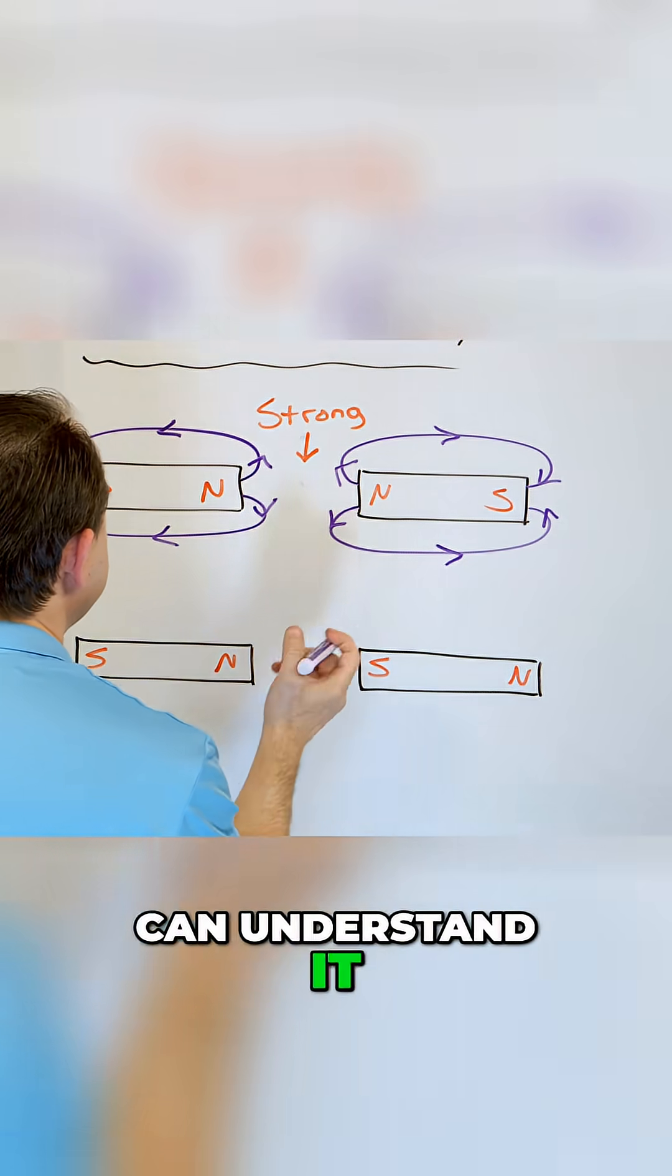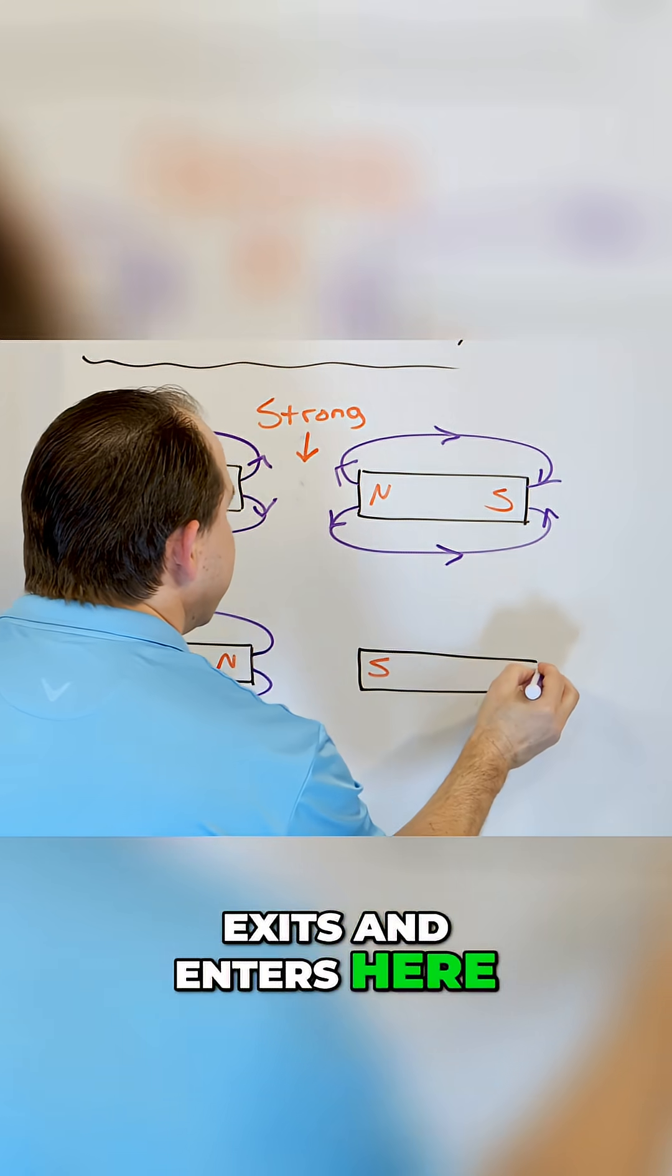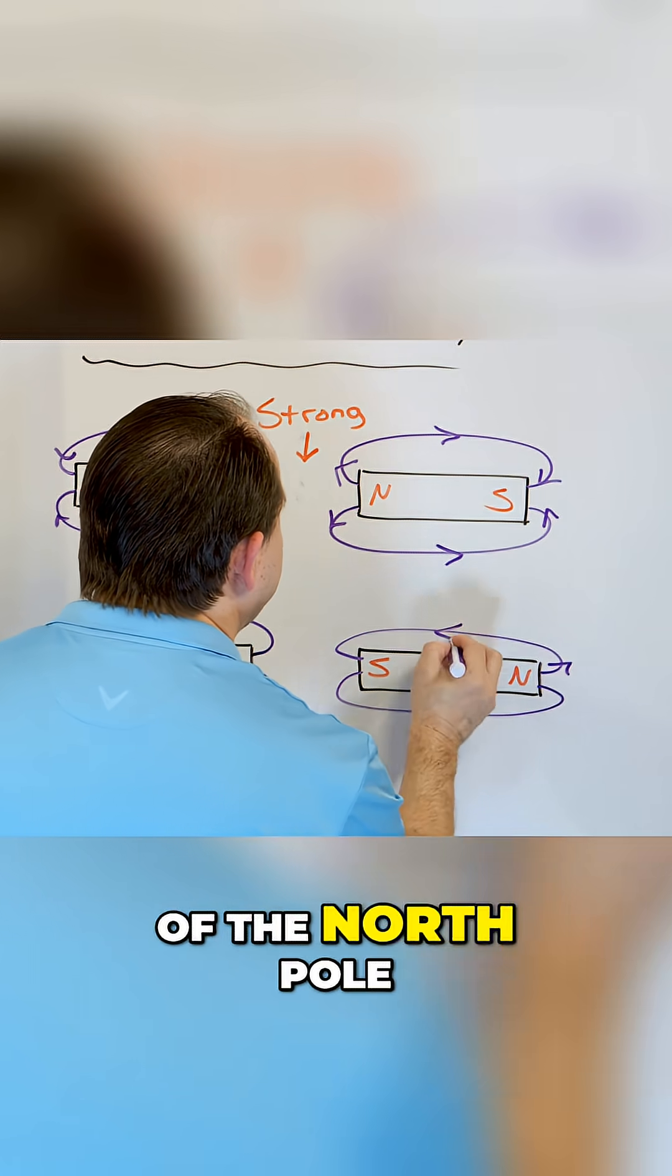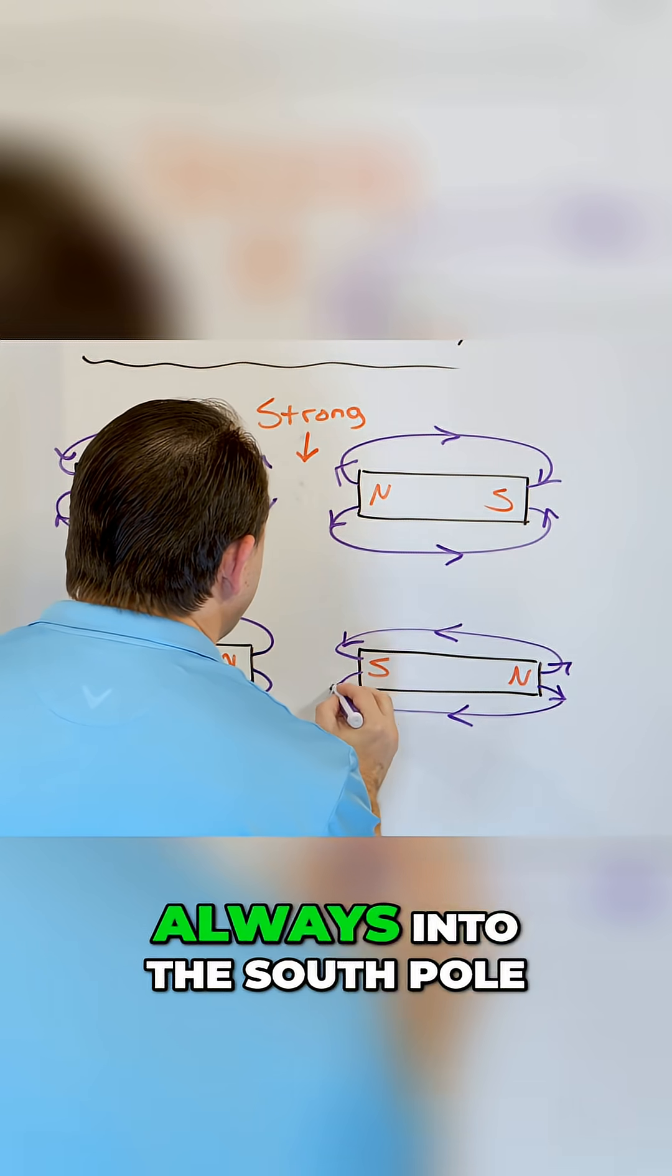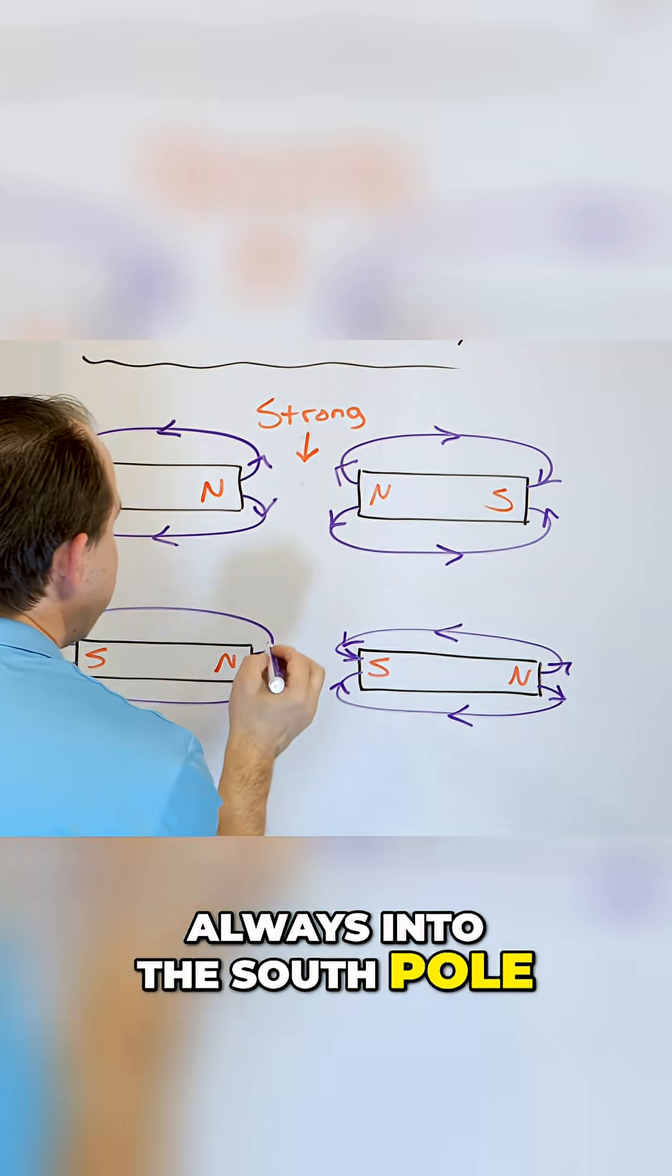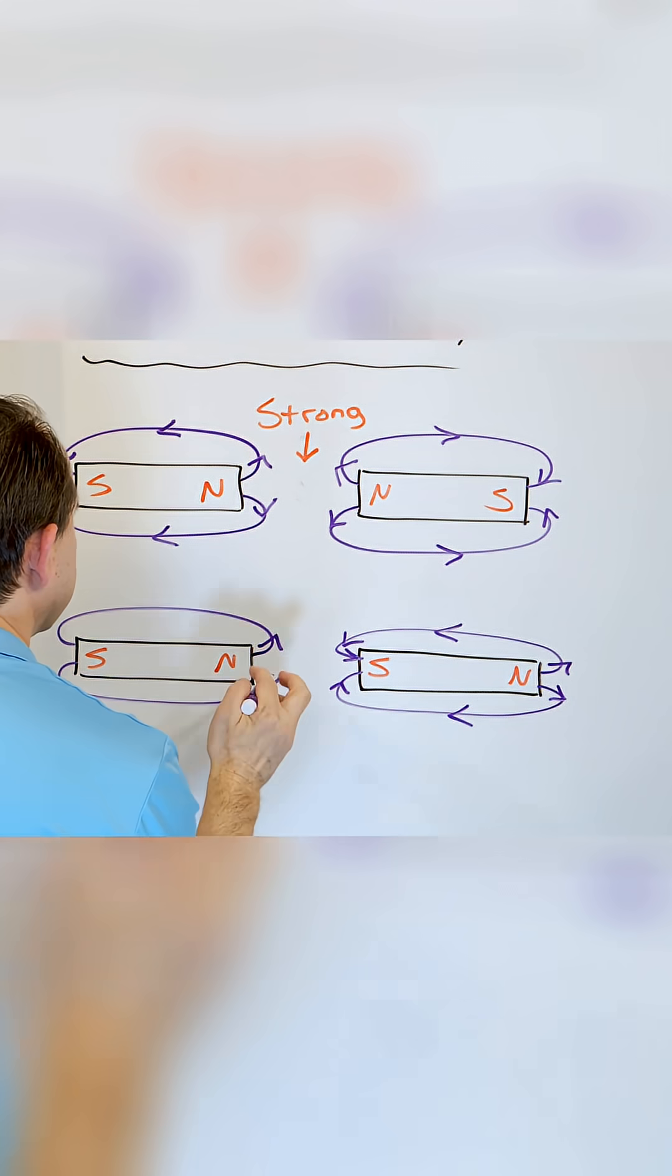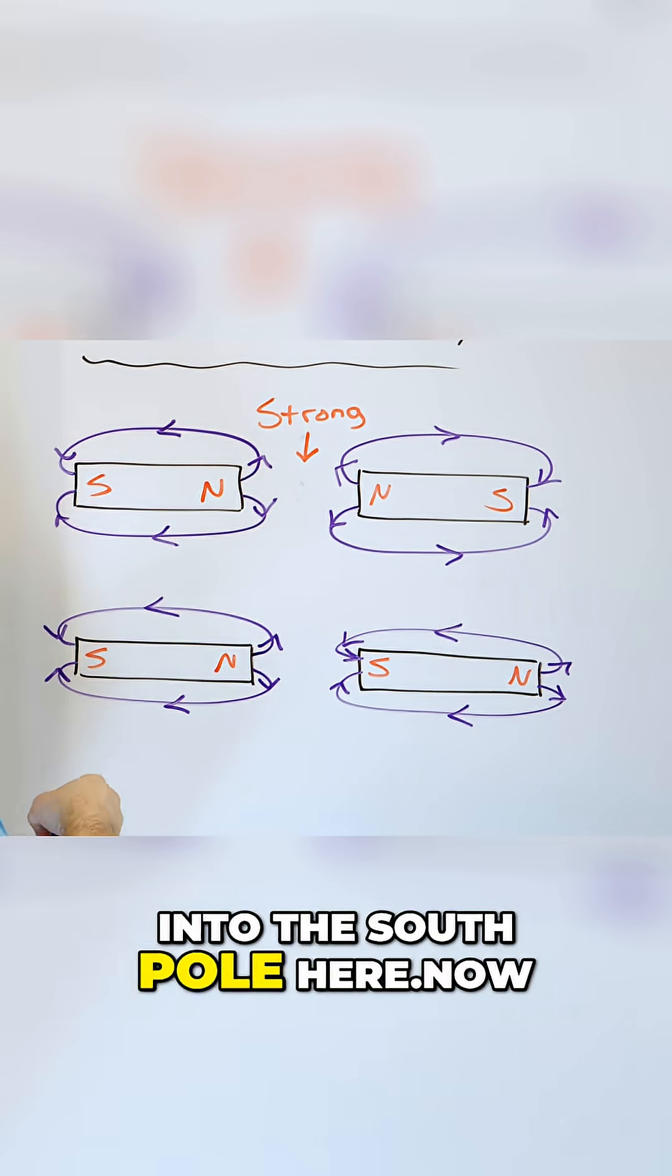Let's see if we can understand it. The magnetic field exits and enters here, exits and enters here. It comes out here and enters here. It goes out of the north pole, always into the south pole. So out of the north pole here and this direction, and into the south pole here.